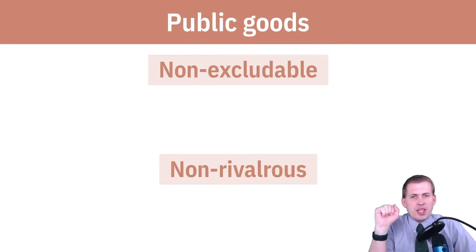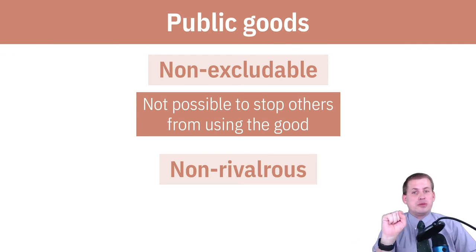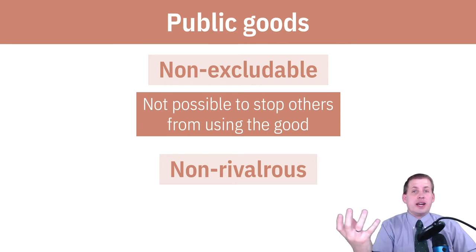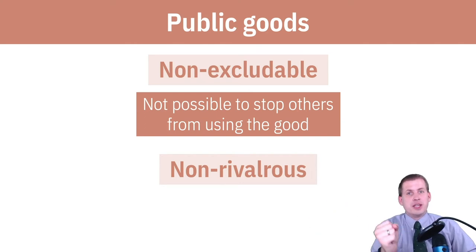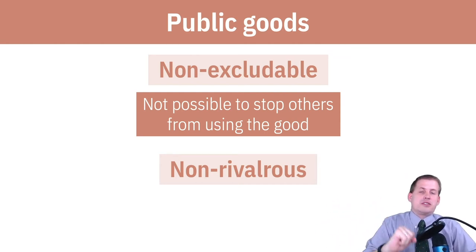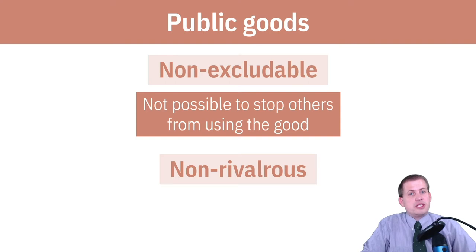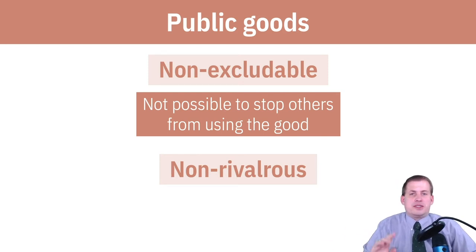Non-excludable means you cannot stop other people from using the good. In the card game, there's no way to stop anyone from receiving the benefit of the red cards in the pool — everybody in the class gets whatever red cards are there, regardless of whether they donated. You see non-excludability in more typical public goods: a freeway is technically supposed to be non-excludable — no tolls, no fences blocking access. It's open to the public and you can't stop people from using it, though in reality many states do put tolls on interstate systems.